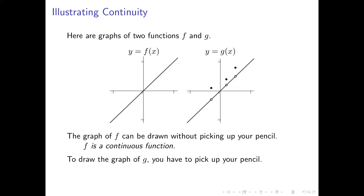But in order to draw the graph of g, you need to pick up your pencil, because as you're drawing the graph you're going to hit those three points where the graph skips up to a point further up than where you would expect to be. So there's no way to draw that without picking your pencil up from the page. g, then, is a discontinuous function. We want a way of characterizing these things in terms of limits.